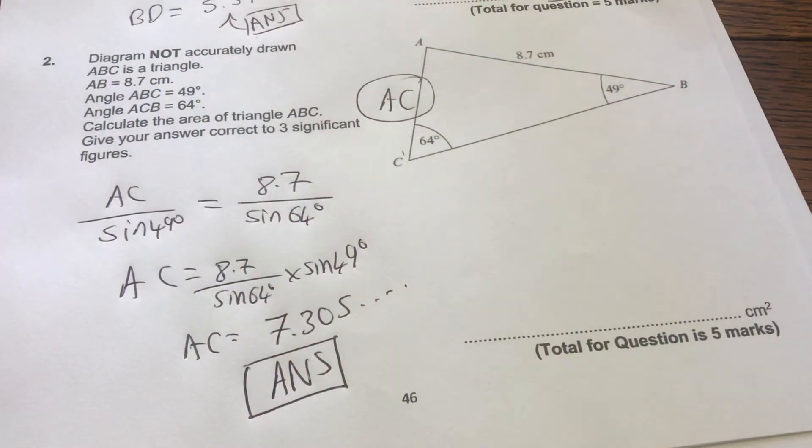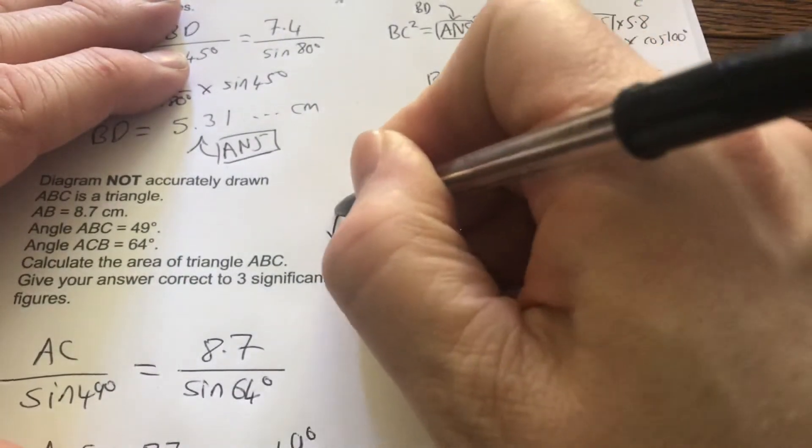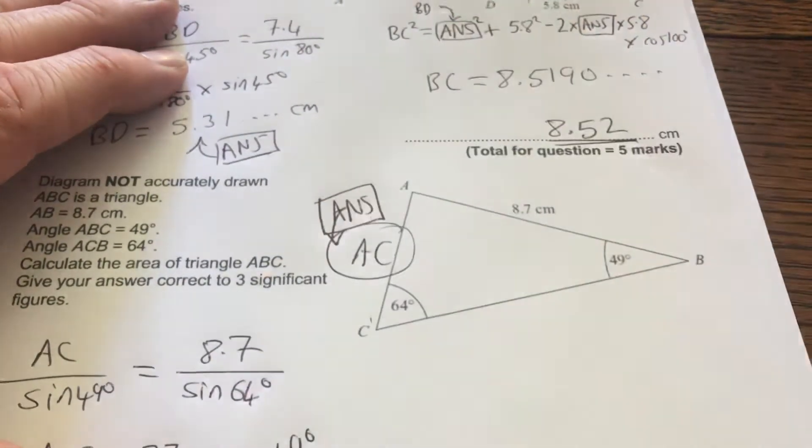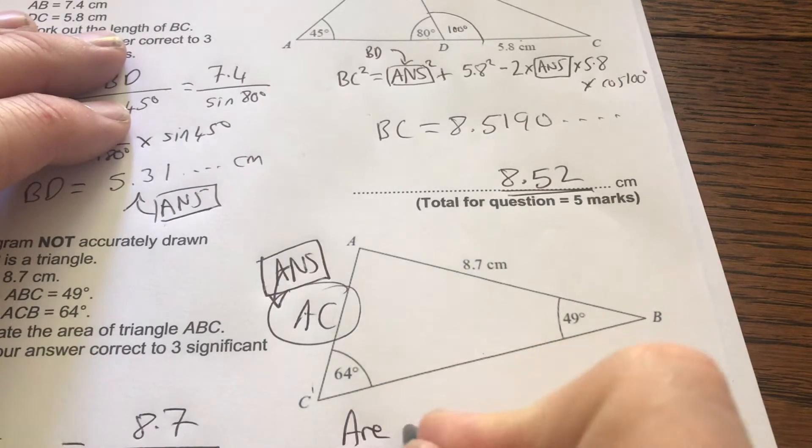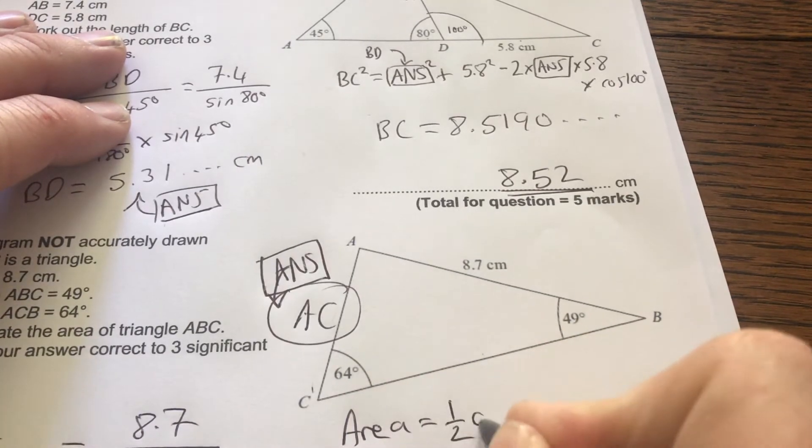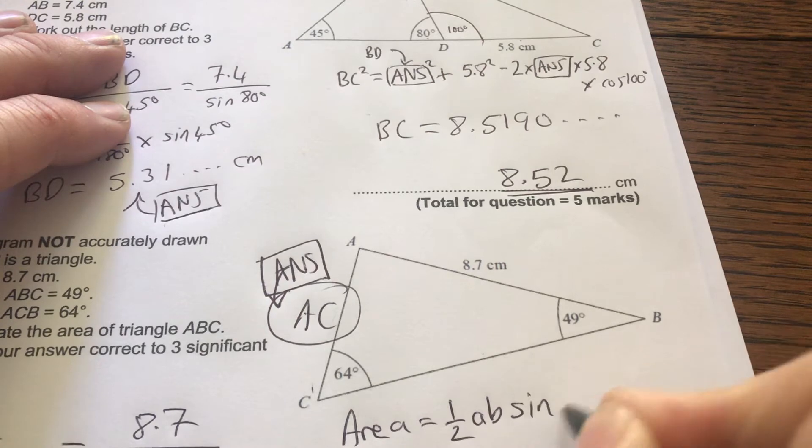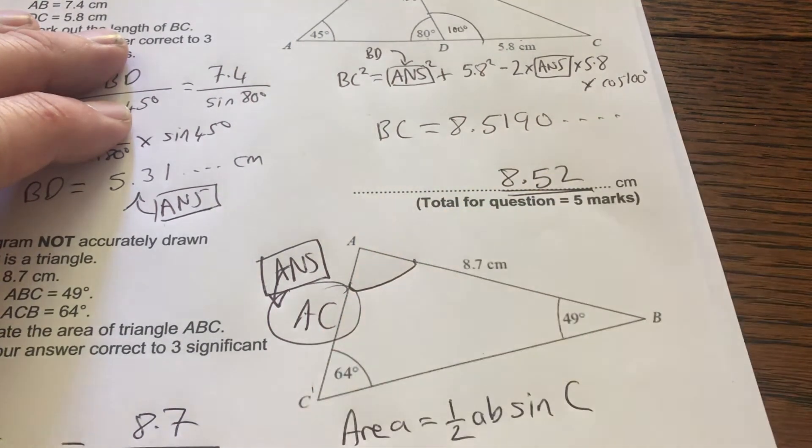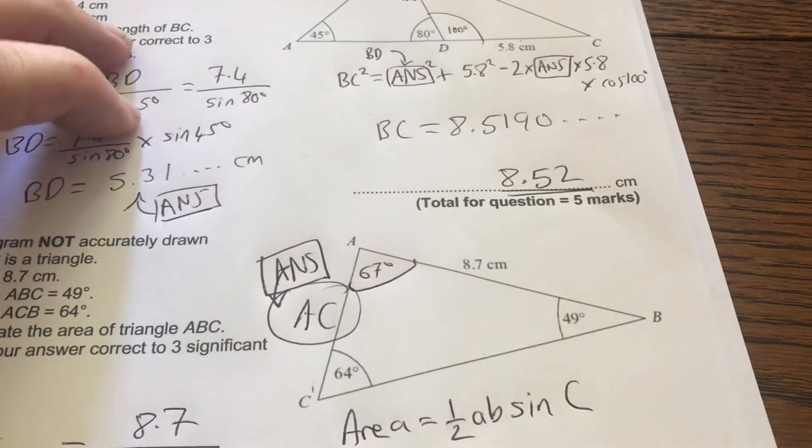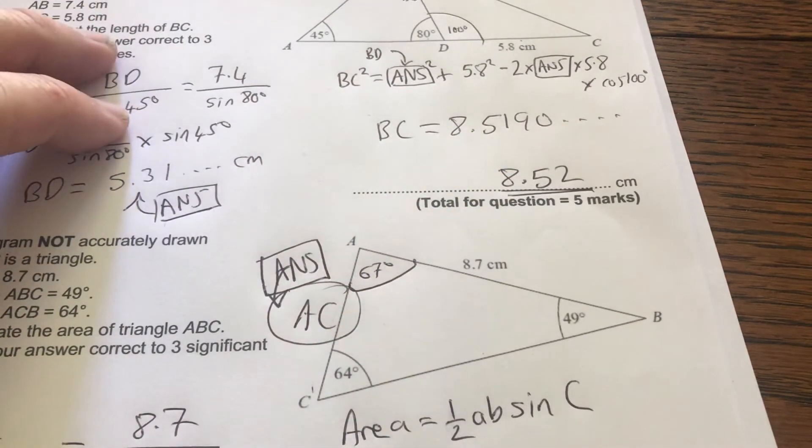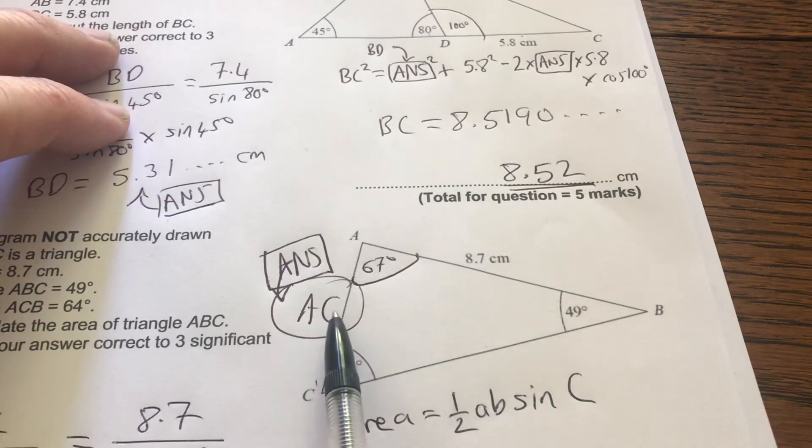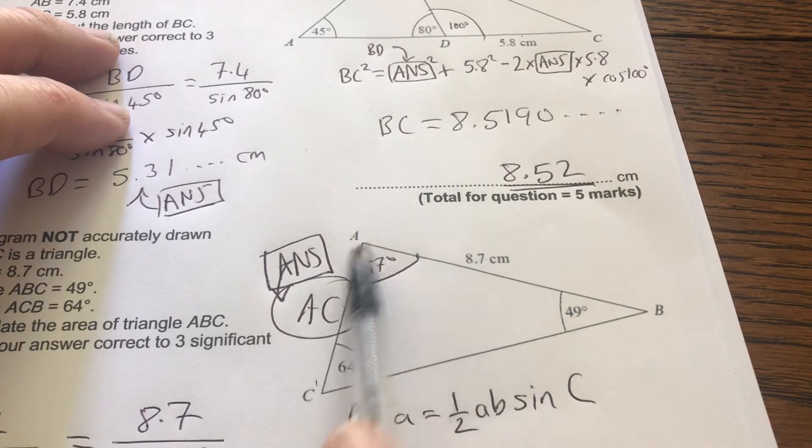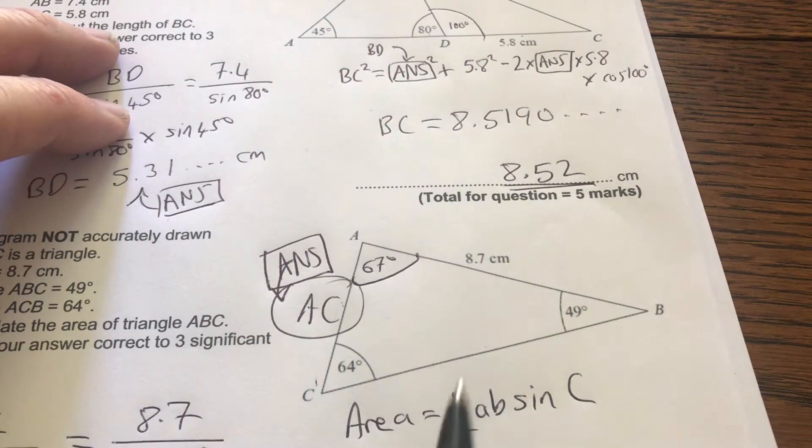Because we're then going to stick that straight into the next part. Now remember area equals half a b sine c. So I'm going to work this one out. Look that's 67 degrees. How do I know? Angles in a triangle add up to 180. I've therefore got this side, this side, this side and the angle in between. I can use this formula.